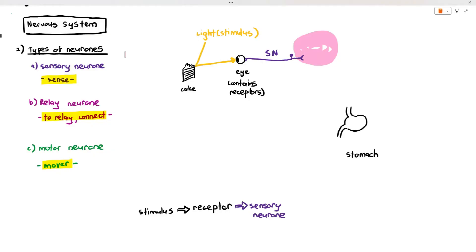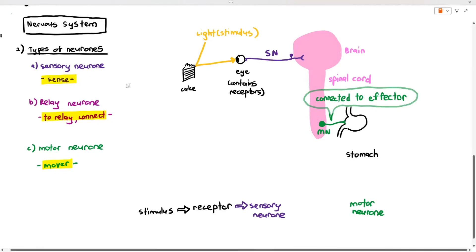I will talk about the function in a while, but what am I drawing over there in pink? You can see that it's the brain and the spinal cord. And at the bottom of the spinal cord, I'm drawing out a green neuron from the inside of the spinal cord towards the stomach. And that is MN, which is the motor neuron. The motor neuron is connected to the mover or the effector, which in this case is the stomach.